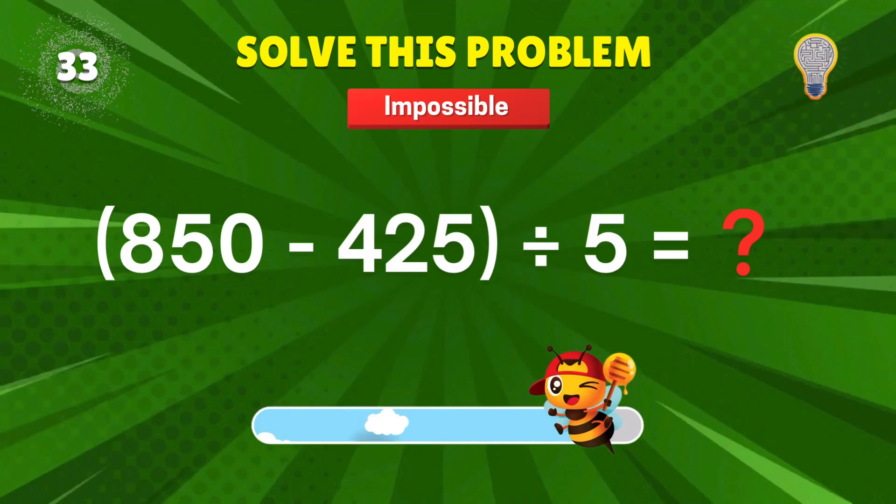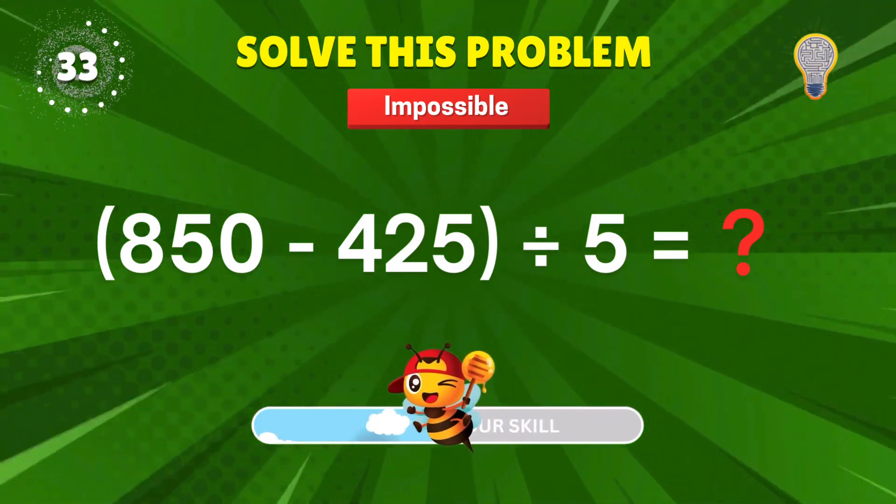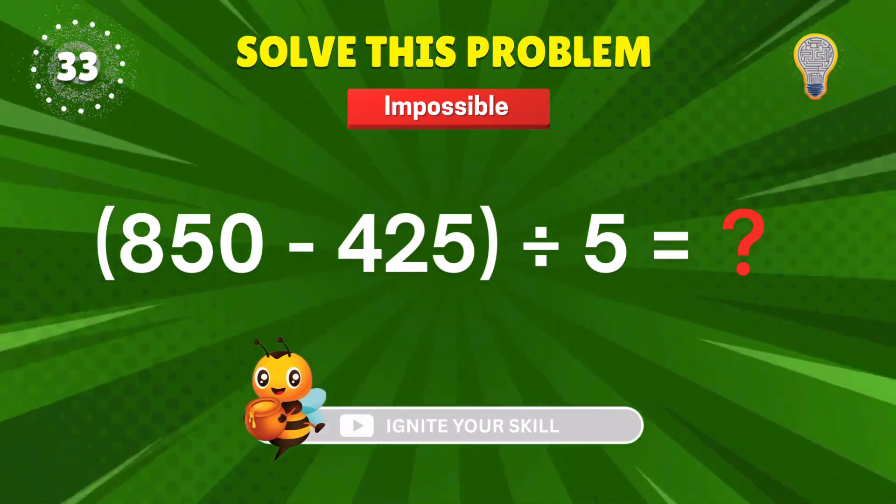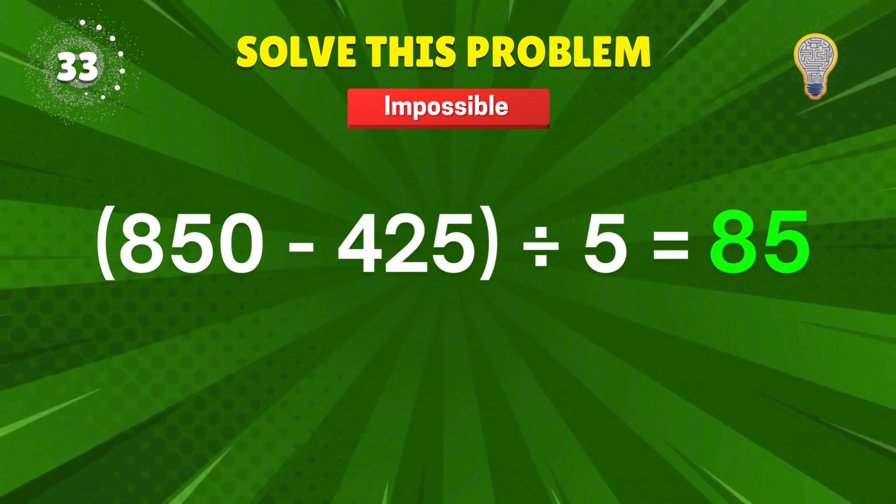850 minus 425? Divided by 5? Balance the books. 85. Accountant alert. Plus 1 point.